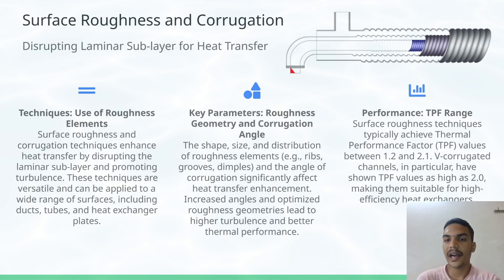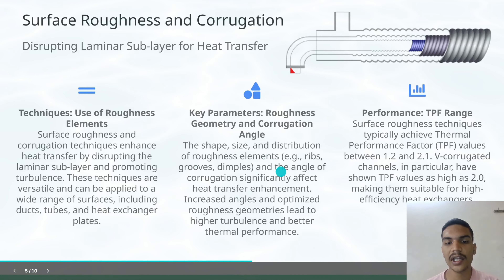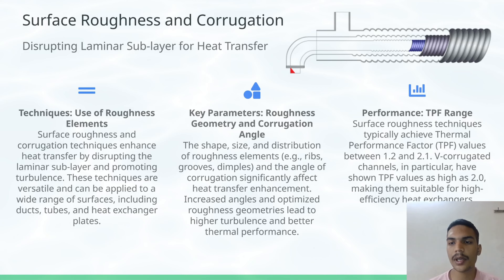The shape, size, and distribution of roughness elements significantly affect heat transfer enhancement. Increased angles lead to optimized roughness and higher turbulence, thus achieving better thermal performance. The TPF in this is generally between 1.2 and 2.1.